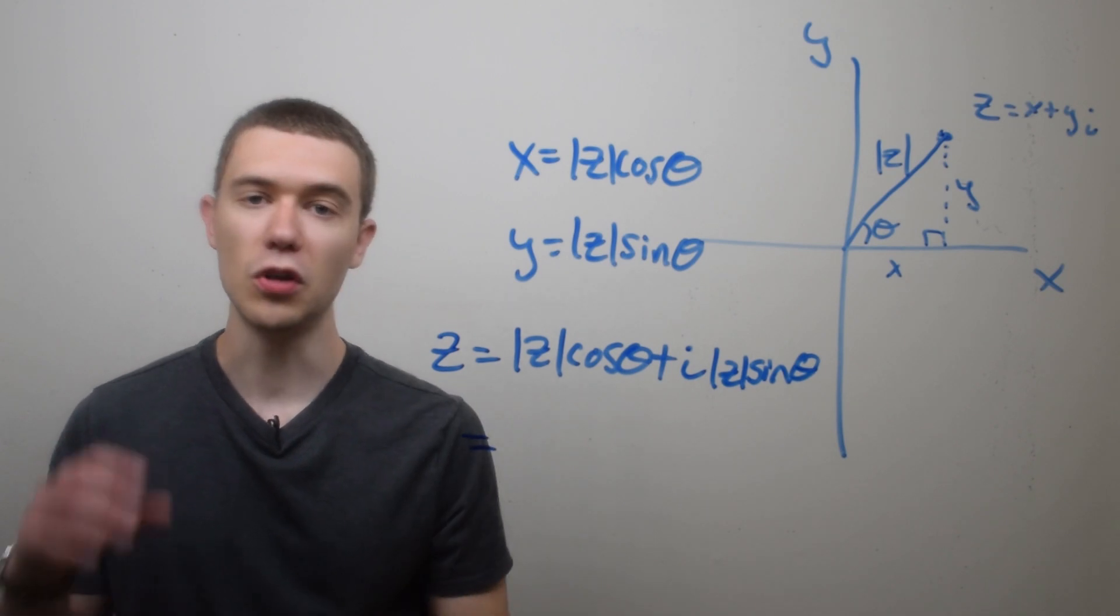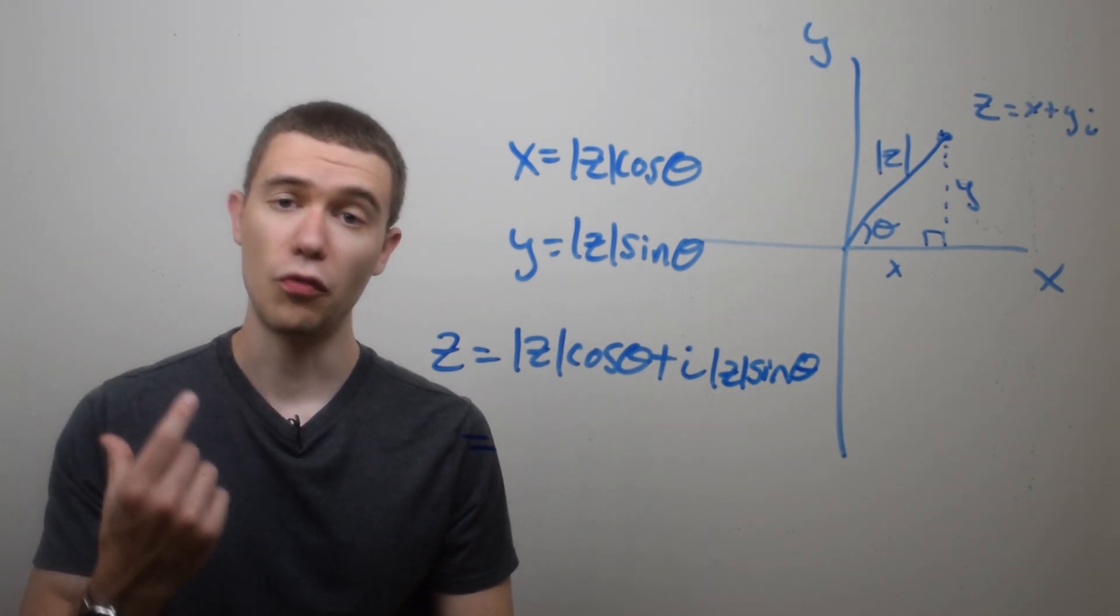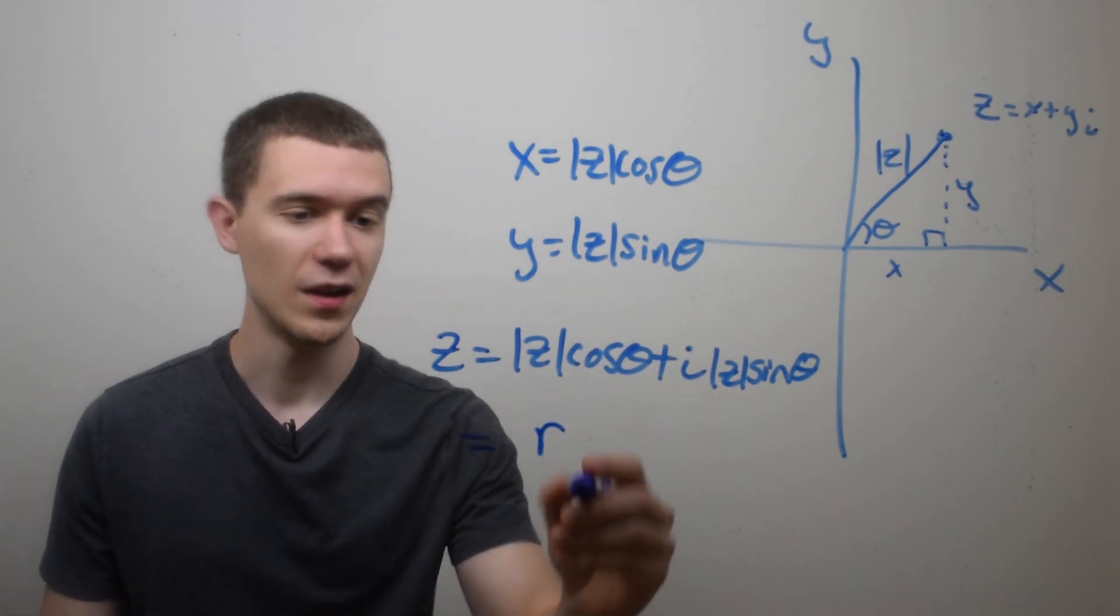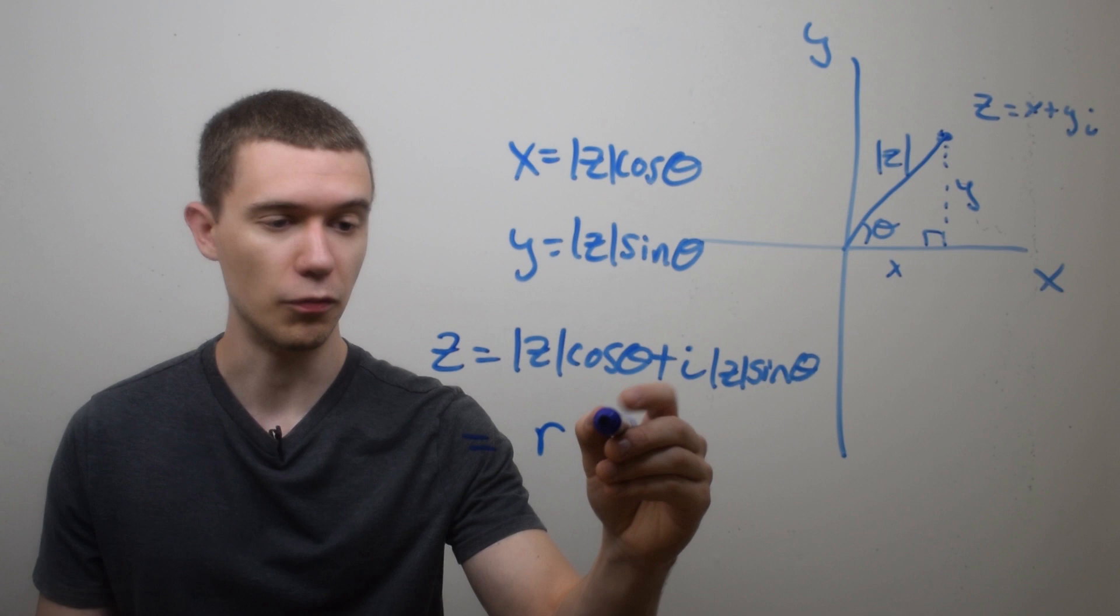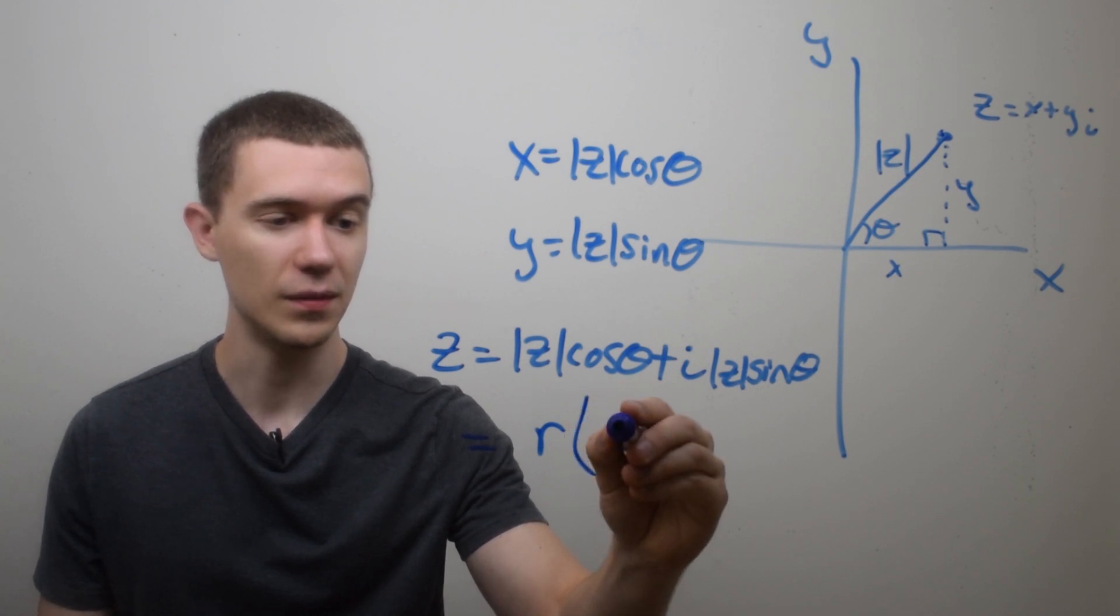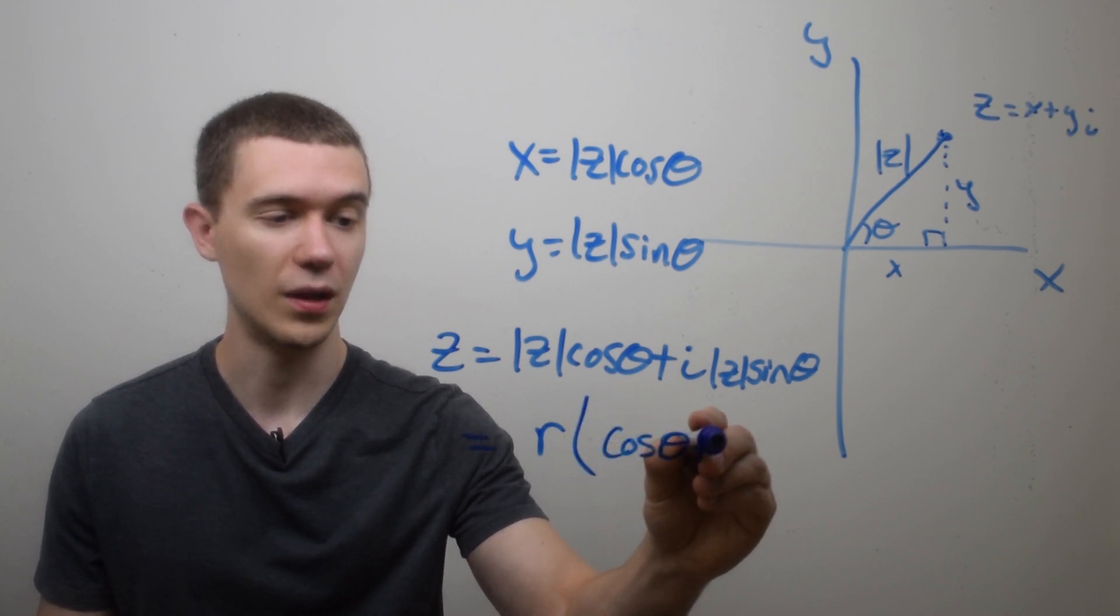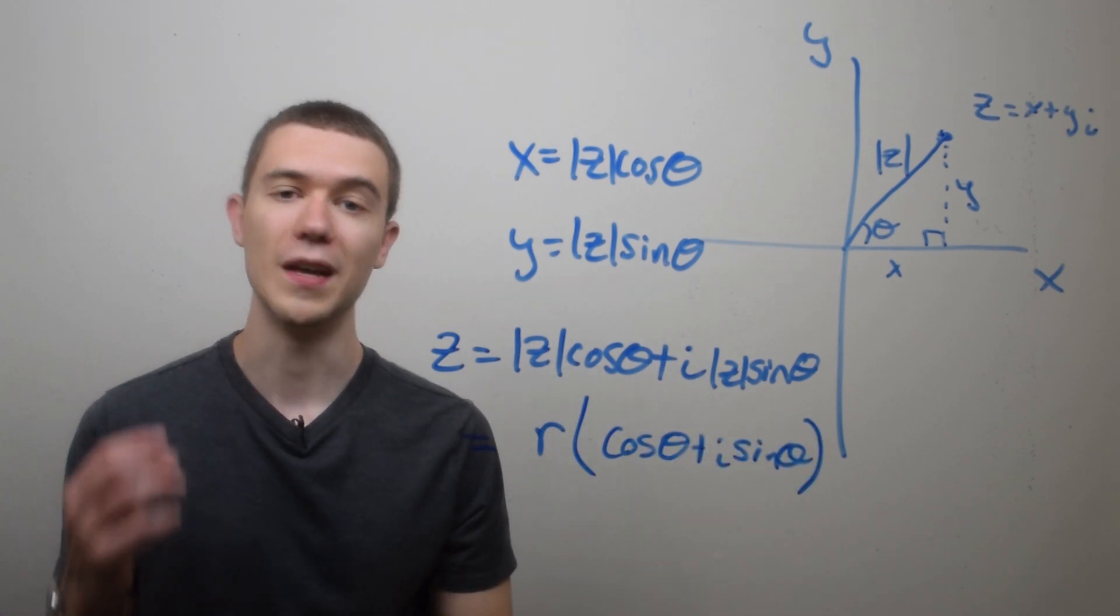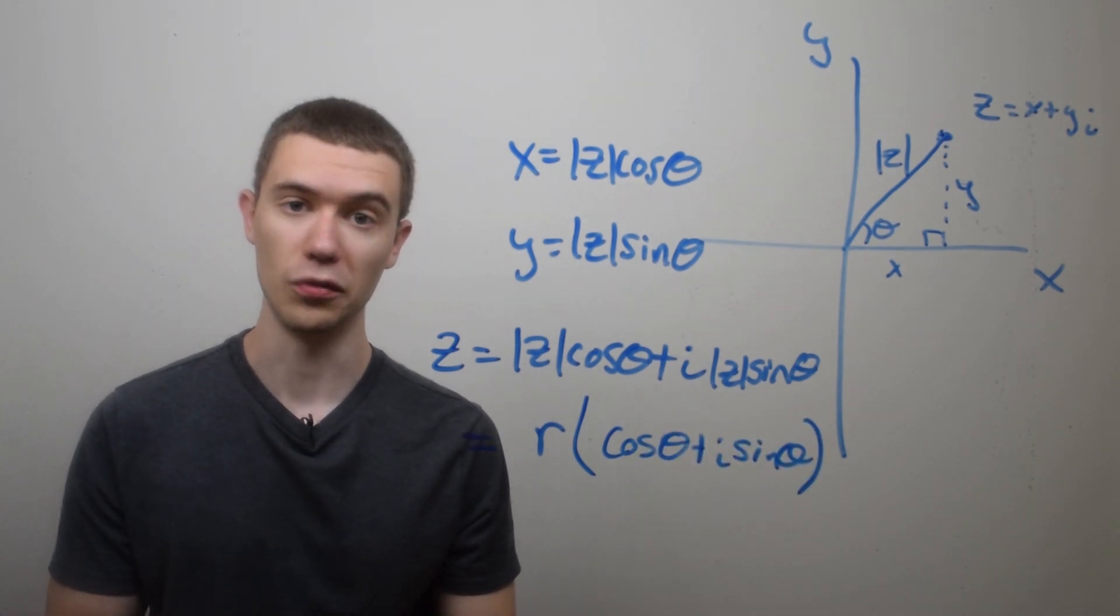And when you're talking about polar forms, the modulus of z, we call that r, r for radius. So this is really r, the radius, or the modulus, times cosine theta plus i sine theta. And any complex number can be represented in this form, its polar form.